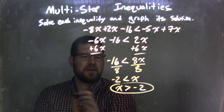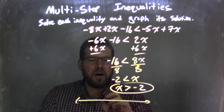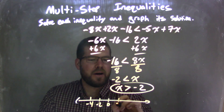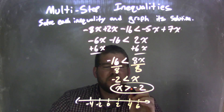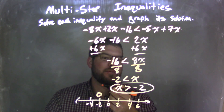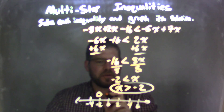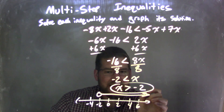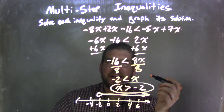So now I can graph this. Let's go by 2: negative 4, negative 2, 0, positive 2, positive 4, positive 6. We said x is greater than negative 2. So I have an open circle at negative 2 because it's not equal to negative 2 — it's just greater than. And I put my arrow to the right because x can be greater than negative 2. This graph now matches my final answer, which is x is greater than negative 2.